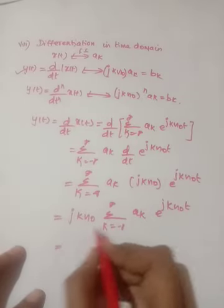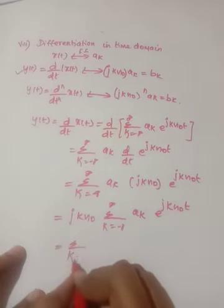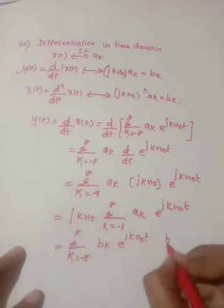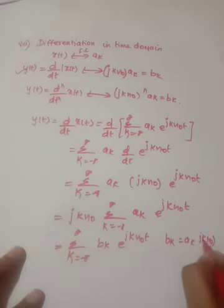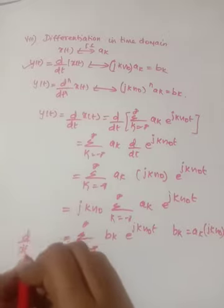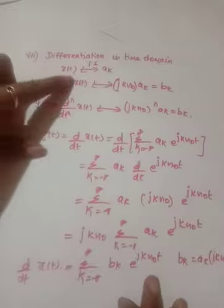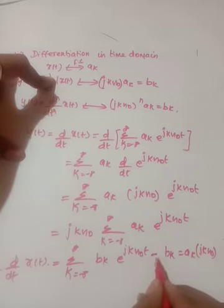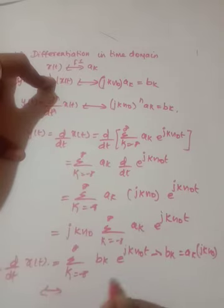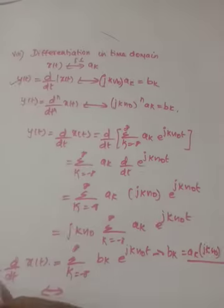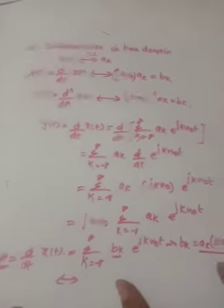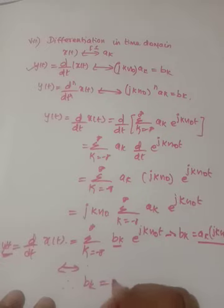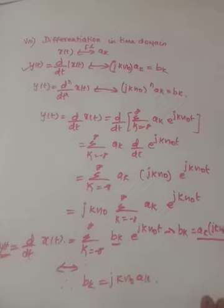This can be written as summation of bk · e^(jkω₀t), where bk = ak · jkω₀. So y(t) = d/dt[x(t)] has Fourier coefficient bk = jkω₀ · ak. Therefore, y(t)'s Fourier series coefficient is bk where bk = jkω₀ · ak.